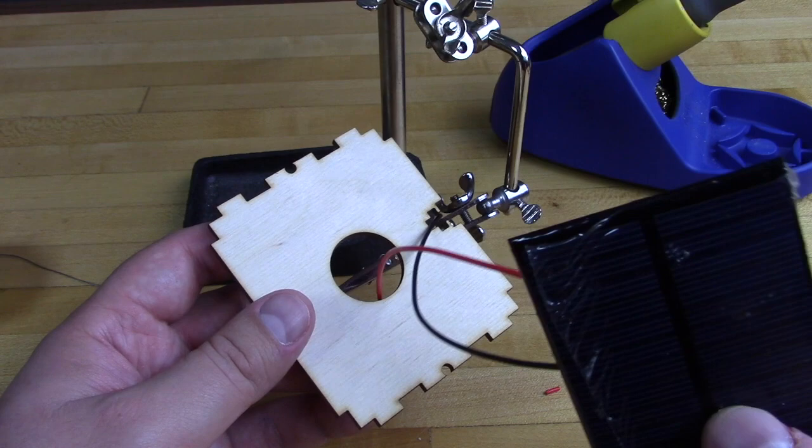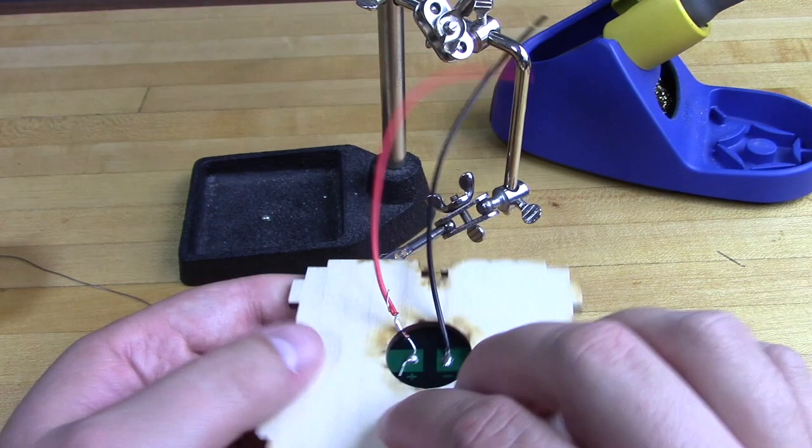Grab your top wooden plate, the one with a large hole in it, and run the wires from your solar cell through it. At this point we'll need to do that to hook up the additional parts.